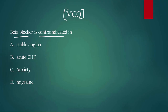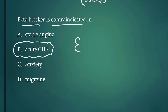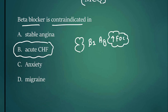MCQ 2: Beta blocker is contraindicated in — option A stable angina, option B acute CHF, option C anxiety, option D migraine. Beta blockers are not given in acute CHF because the heart cannot pump adequately, and blocking beta-1 would worsen the condition by reducing the force of contraction.